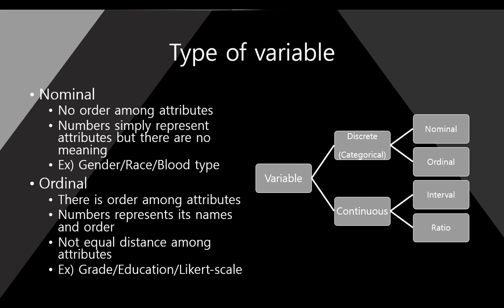Nominal. Nominal variable has no order among attributes. And numbers simply represent attributes, but there are no meanings. For example, gender. Male and female. The variable gender has two attributes. Male and female. There is no order. Right? And also, if we assign zero to male and one to female, in that case, the zero and one has no meaning for male and female. And likewise, race and blood types are nominal.